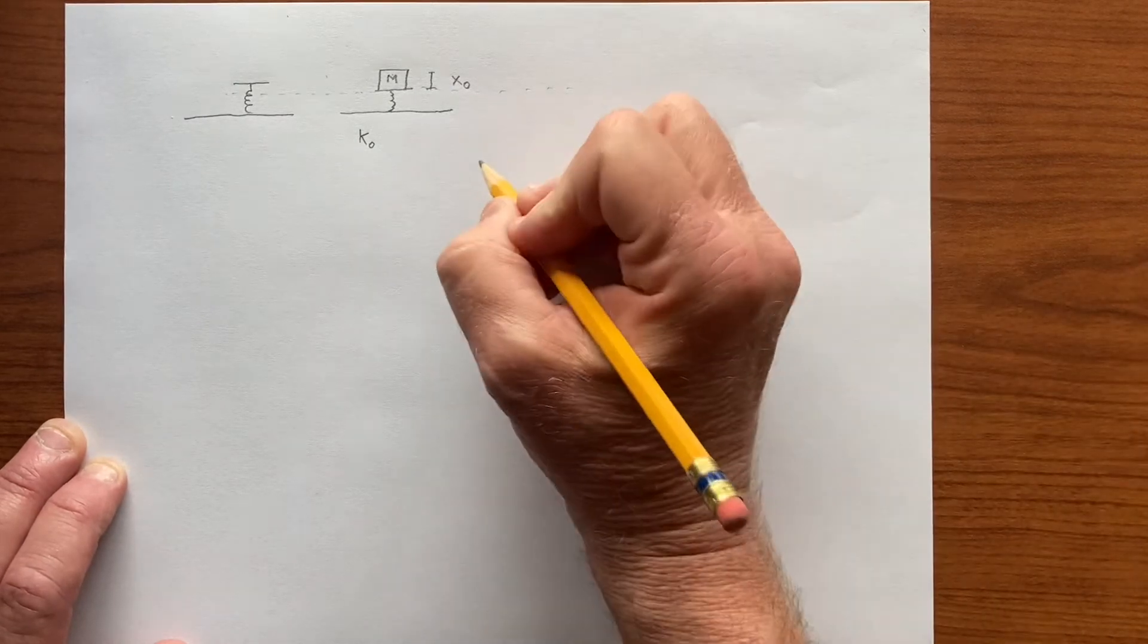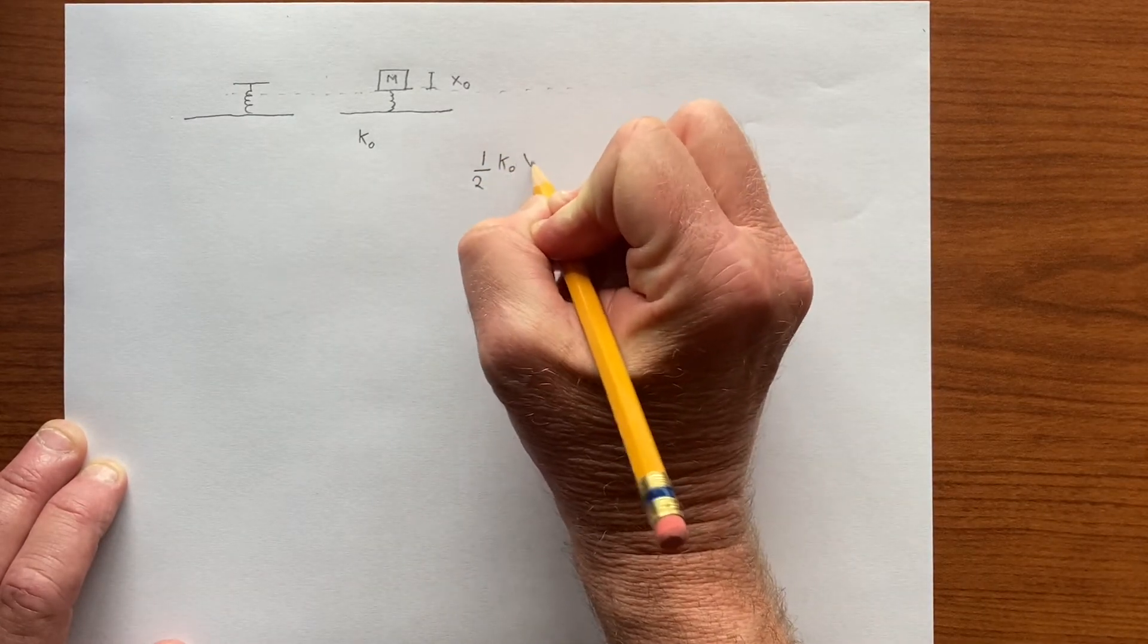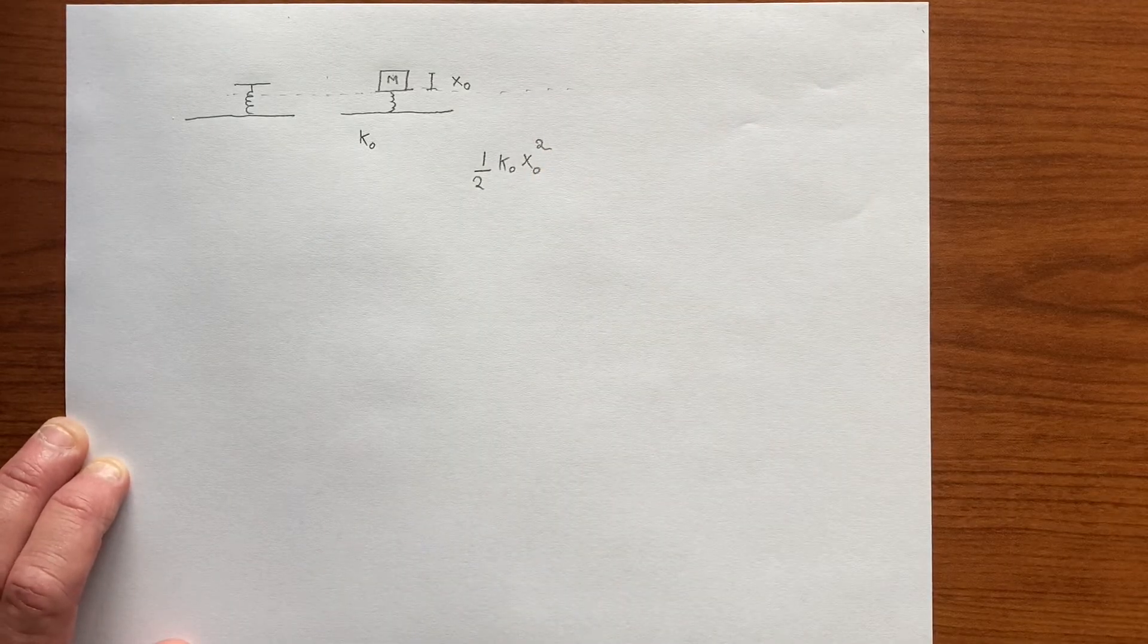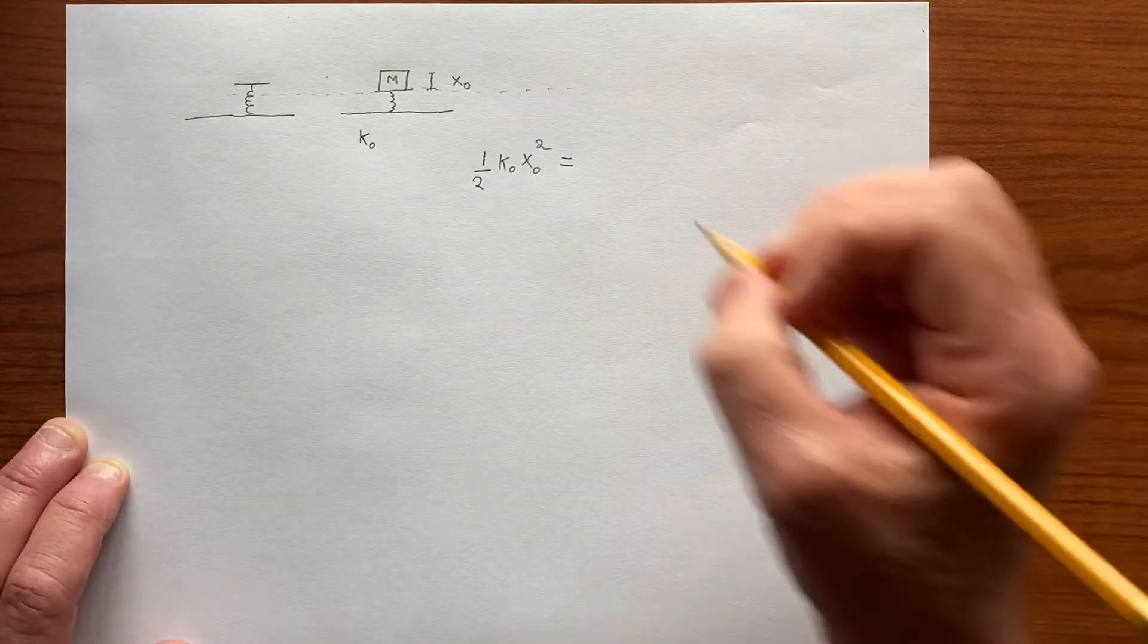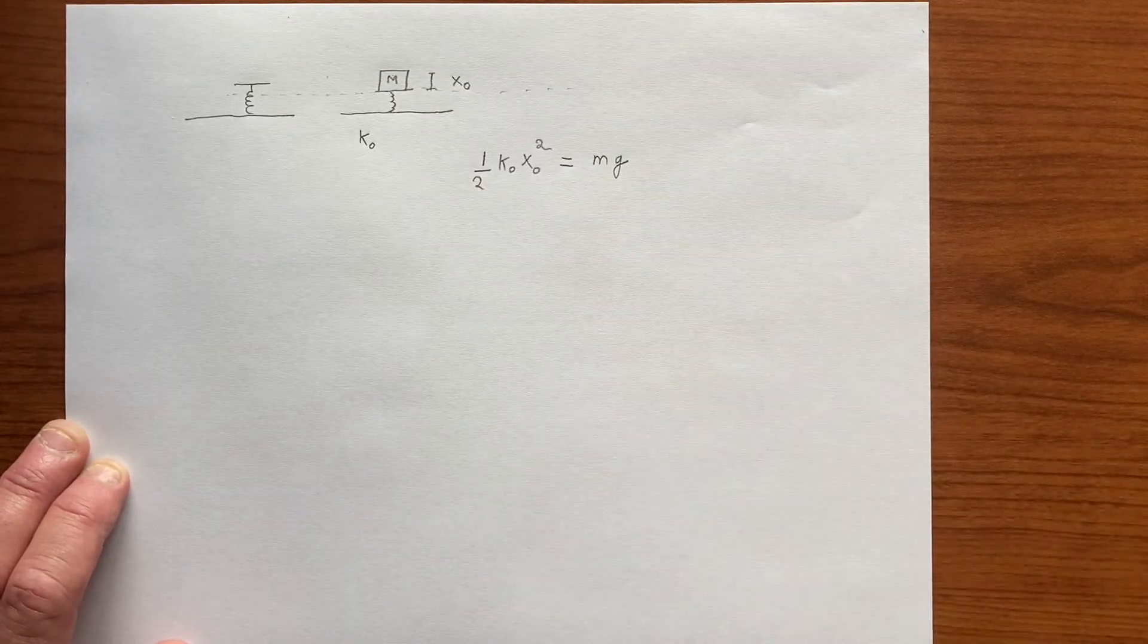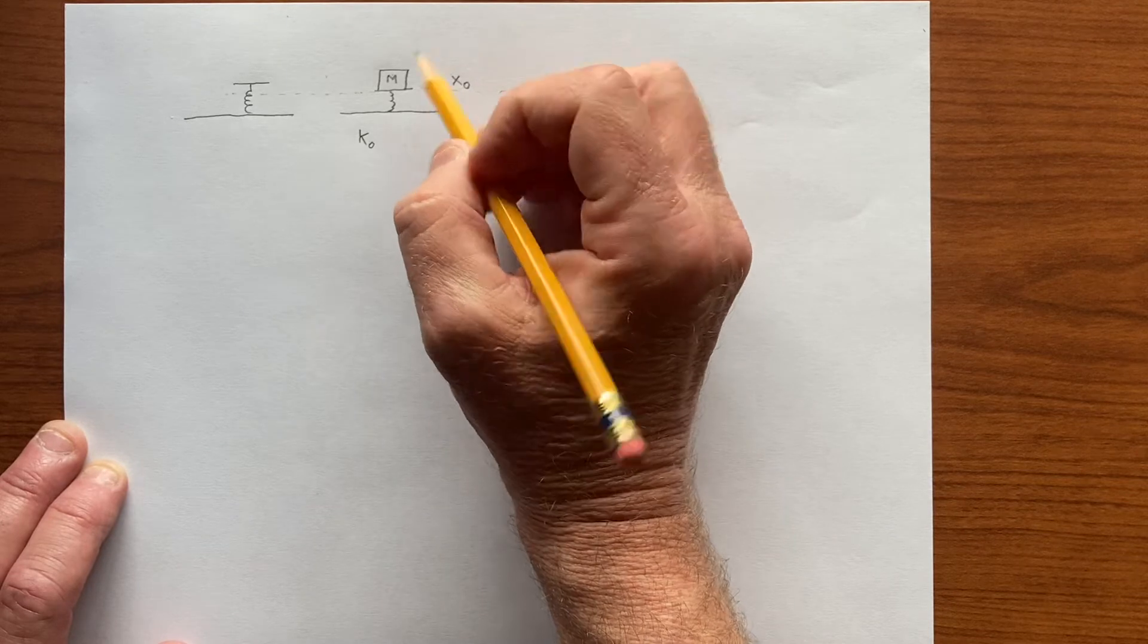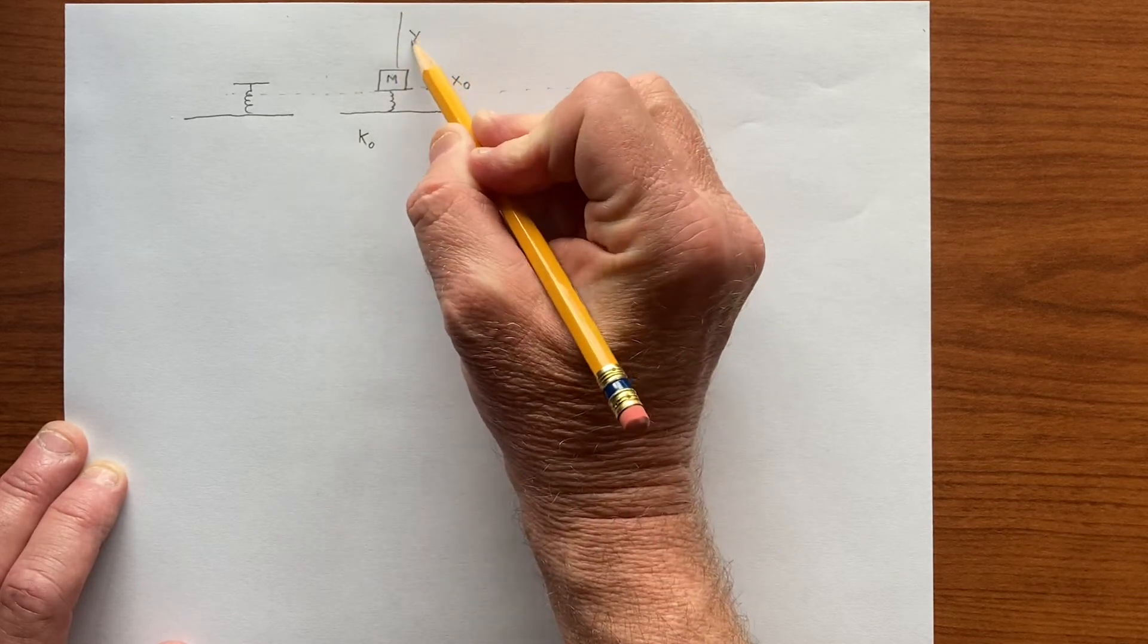then the initial energy is one half k0 x0 squared and the final energy is gravitational potential energy mg times the total height. But we want to write that in terms of the additional y the object travels.